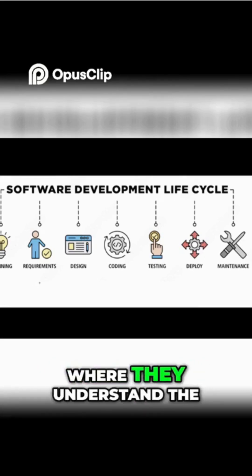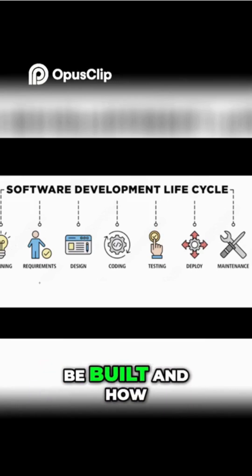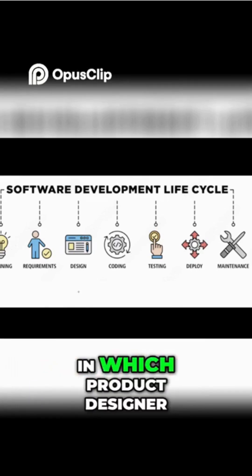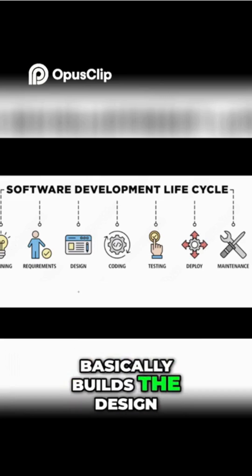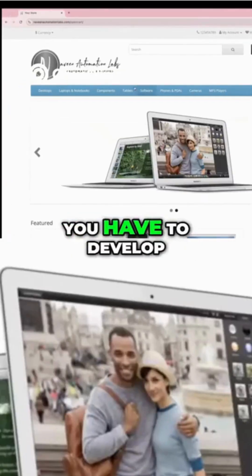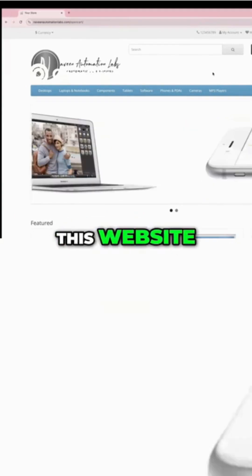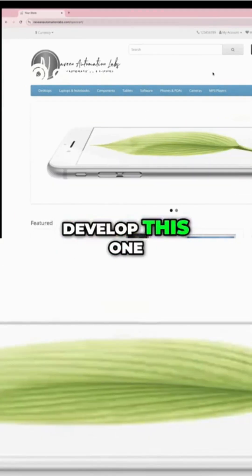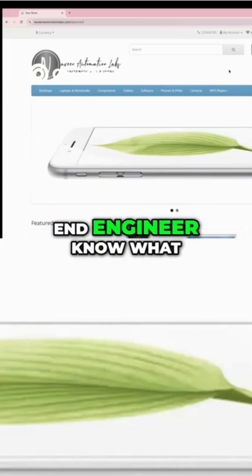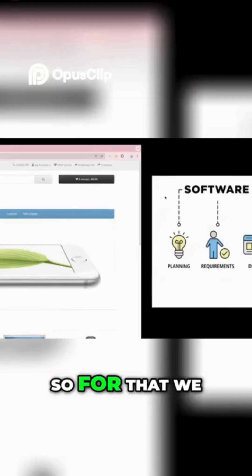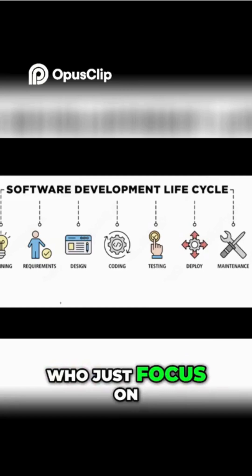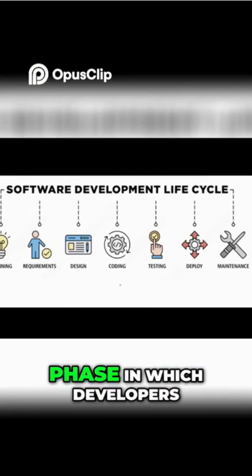Then we have the design phase, in which the product designer builds the design for your website. For example, to develop a website like this one, we need designs first so the front-end engineer knows what to build. For that, there is a dedicated design team who focuses solely on creating designs.